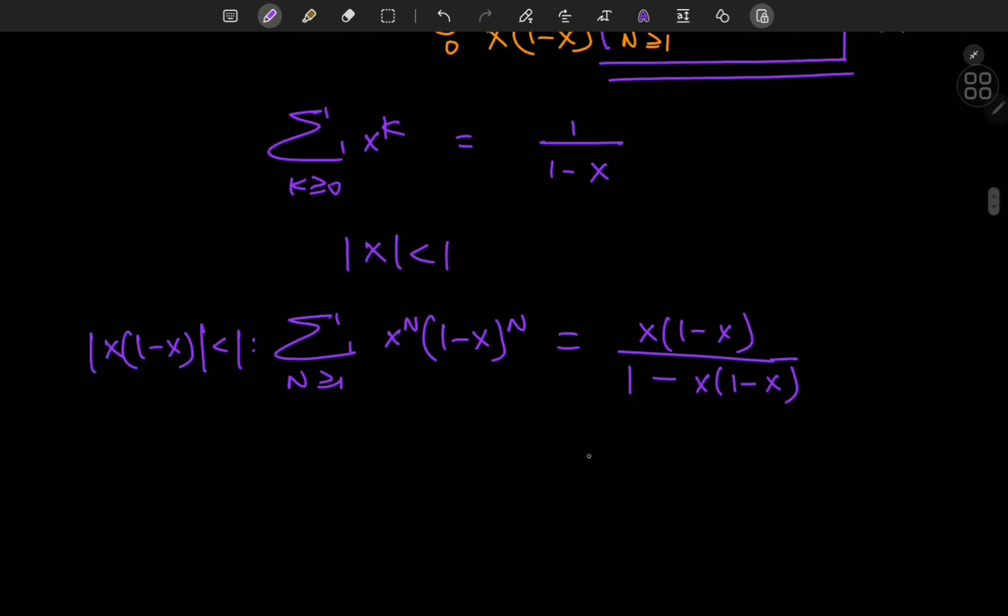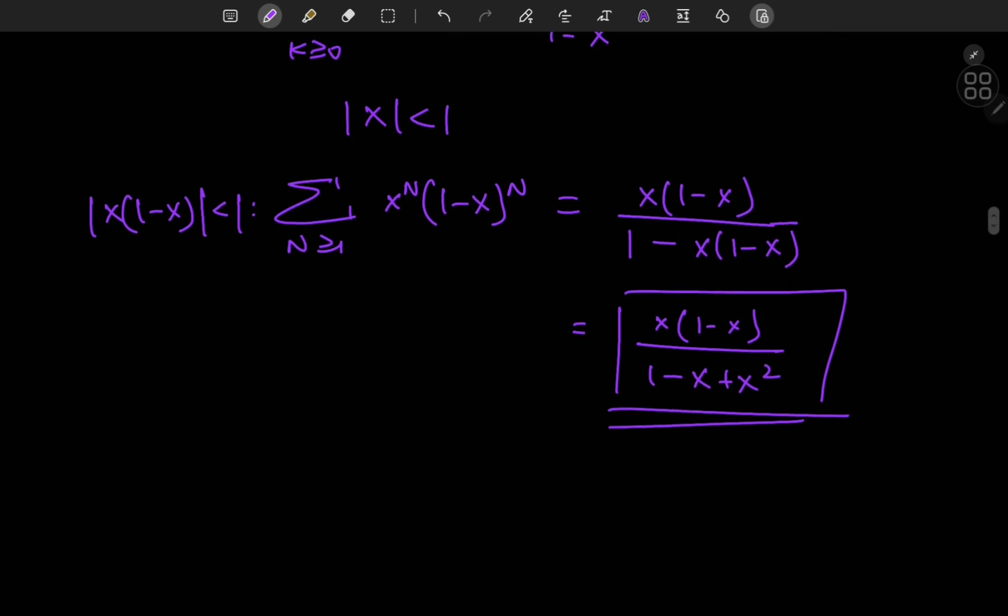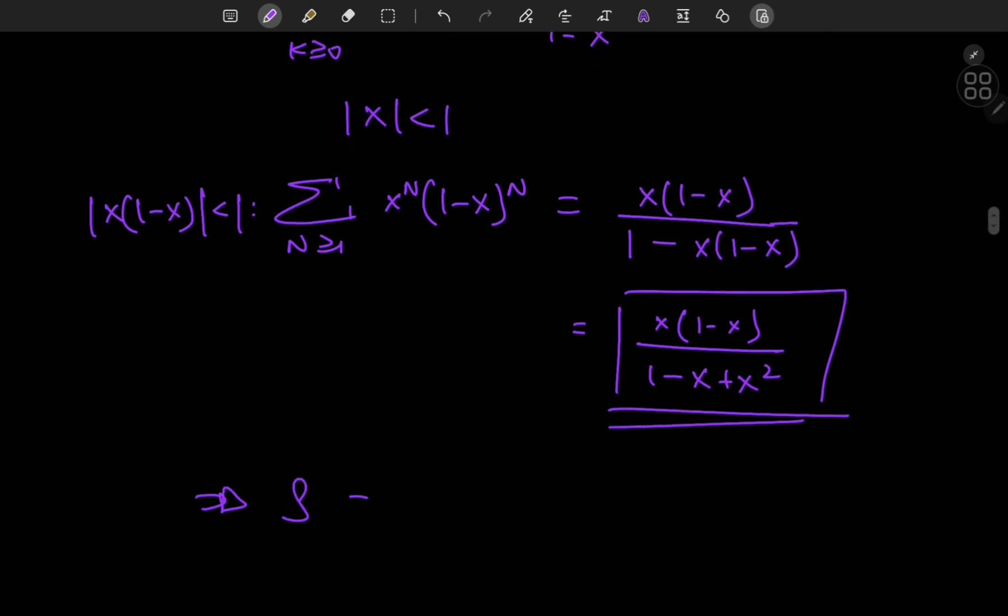So let me just clean this up a bit. We have x times 1 minus x divided by 1 minus x plus x squared. That's pretty much all we need.